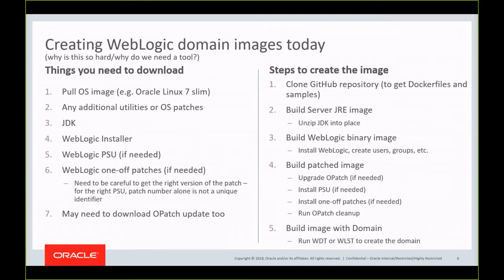Patches can conflict, so you need to check for any conflicts, and some patches may require OPatch itself to be updated, so you may also need to download and install the OPatch update. Once you've downloaded all of those, you need to get your Dockerfiles or samples from the GitHub repository. You need to build a server JRE image, a WebLogic binary image, then a patch image — which may include upgrading OPatch, installing PSUs, installing one-off patches, running OPatch cleaner — and then you need to build the domain. There are quite a lot of steps and moving parts, and things that can go wrong, and this can take quite a long time to complete.